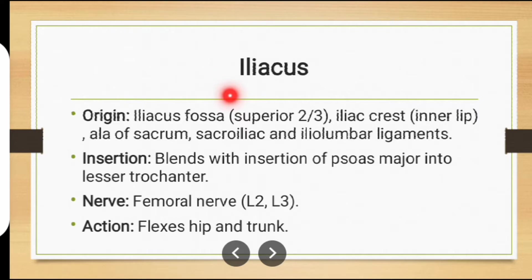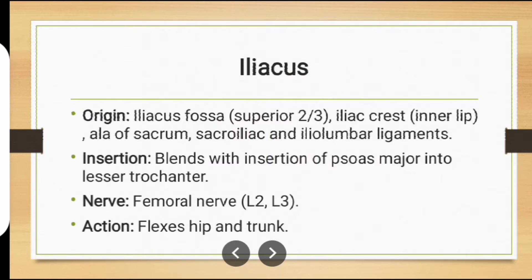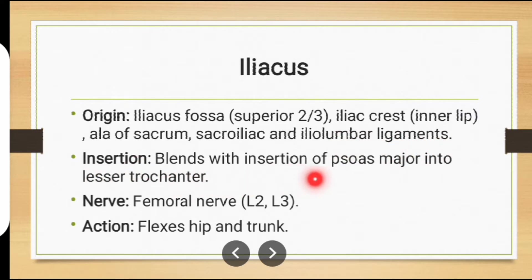The next muscle is iliacus muscle. The muscle in green is iliacus muscle. Origin: iliac fossa, superior two-thirds of iliac crest, inner lip, ala of sacrum, sacroiliac and iliolumbar ligaments. Insertion: blends with insertion of psoas major into lesser trochanter. Nerve supply: femoral nerve. Action: hip flexion and trunk flexion.